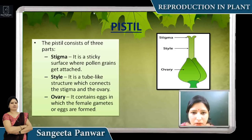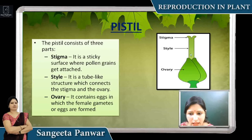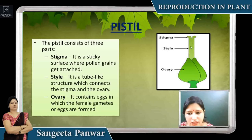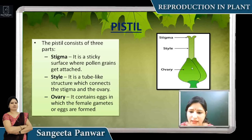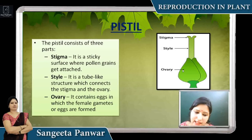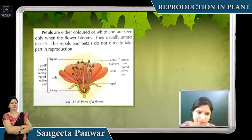Similarly, the female gamete is in the pistil, which has three parts: stigma, style, and ovary. When pollen grains fall on the stigma portion and travel through the style to the ovary, inside the ovary are ovules, and inside the ovules is the egg.